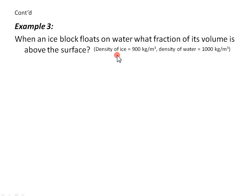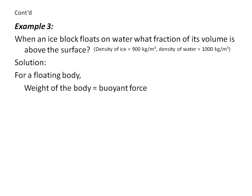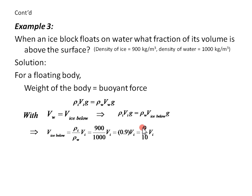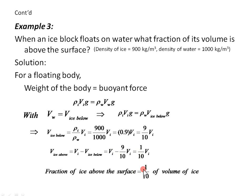In example three, when an ice block floats on water, what fraction of its volume is above the surface, given that density of ice is 900 and that of water is 1000 kilograms per cubic meter? For this floating body, weight of the body equals the buoyant force. Weight of ice is density of ice times volume of ice times g, and buoyant force is density of water times volume of ice below times g. Cancelling g's and rearranging, volume of ice below the surface equals 9 over 10 times volume of ice. The volume above is total volume minus volume below: V_i minus 9/10 V_i equals 1/10 V_i. So the fraction of ice above surface is 1 over 10 of the volume of the ice.